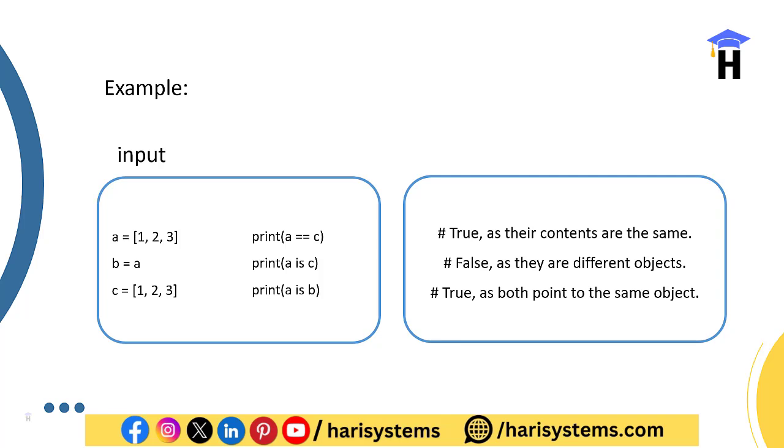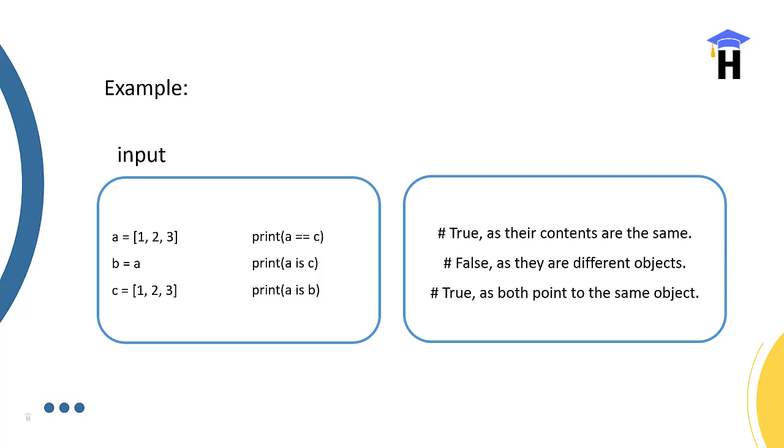Check here: a equals something, a double equals c and b equals a, a is c, and c equals one two three. Print a is b—the value is true in their contents, and the same false—they are different objects. And true, both point to the same objects. So understand how it is going to be the answer.